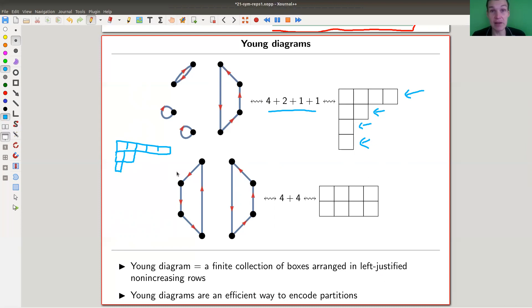And this object that you see is a Young diagram. And it turns out that Young diagrams are an extremely efficient way to encode partitions. It's this arrangement of little blocks,